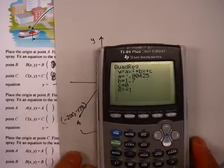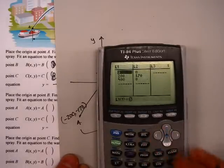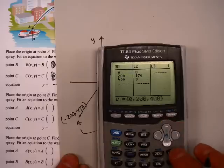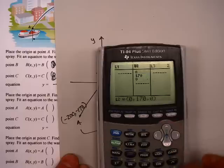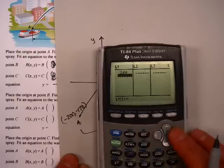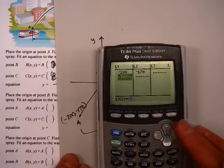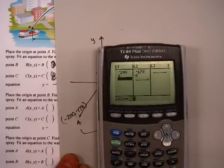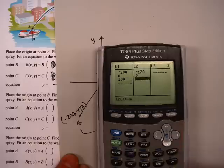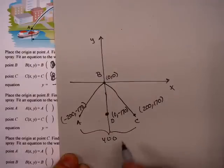So here we go. Bring my calculator over. Hit stat. Edit. Go enter in the first point. Well, let's clear the list first. Go up to the top, L1. Hit clear, enter. Go up to the top of L2. Hit clear, and enter. Let's put these in, negative 200 and negative 170. Zero and zero, and 200 and negative 170. Those correspond to my points here.